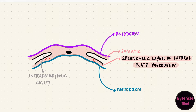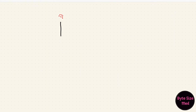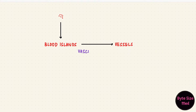It starts off as a cluster of cells. The endoderm underneath stimulates these cells to differentiate into blood islands. These blood islands form vessels, and that process is called vasculogenesis. The vessel that they form here is called the heart tube, and there are two — so paired heart tubes.